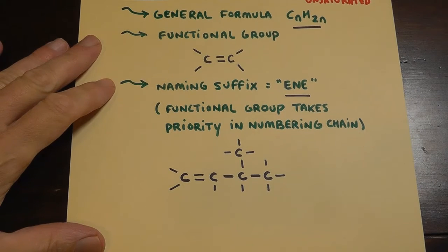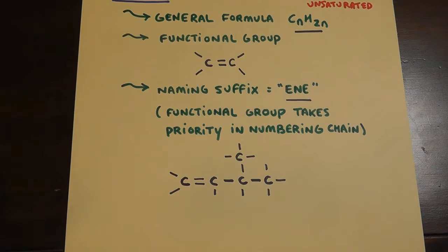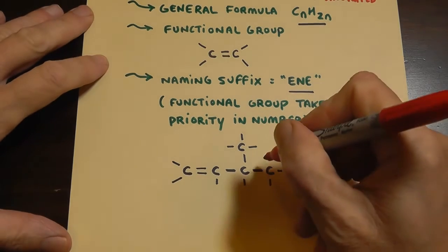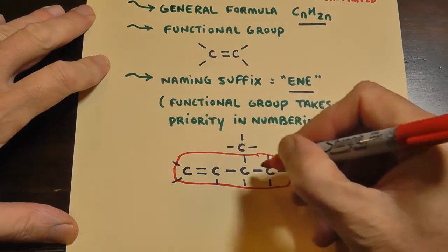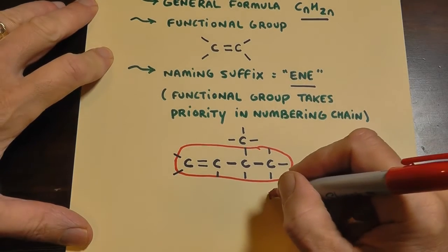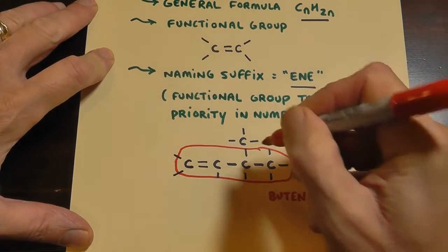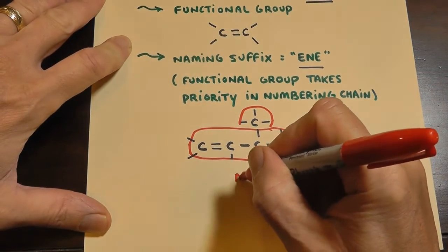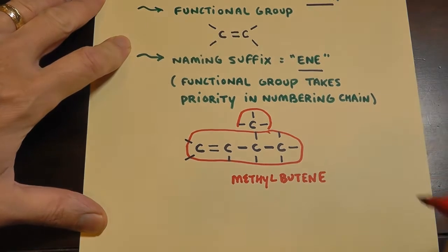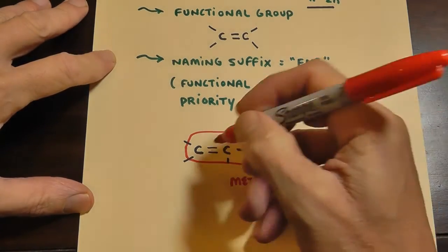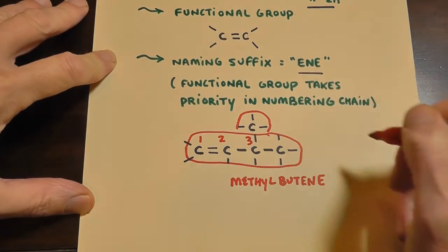The other thing is when we number the chain now, if we have a group on there like our example, that's going to take a back seat to numbering the functional group. So the first thing you do with any compound with a functional group is you number the chain to give the functional group the lowest number. So we're going to name this bad boy here. Same kind of procedure. You're going to find the base chain, which here has 1, 2, 3, 4 carbons. And so this is going to be butene. Remember, we're in alkenes here. And now I got a methyl group.